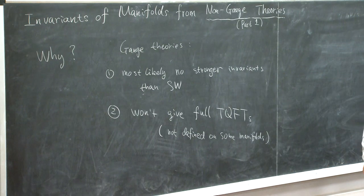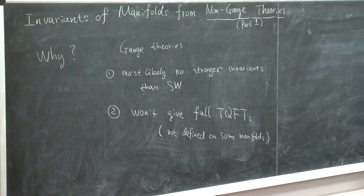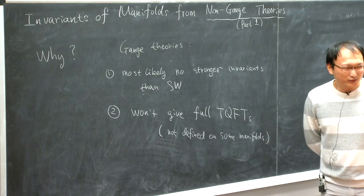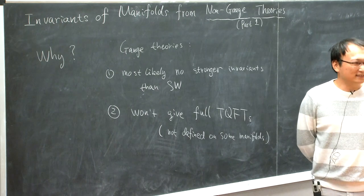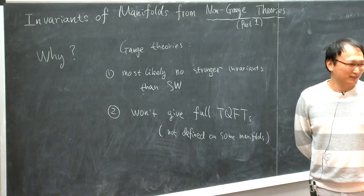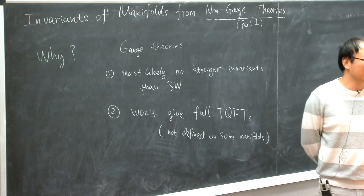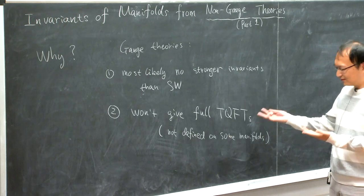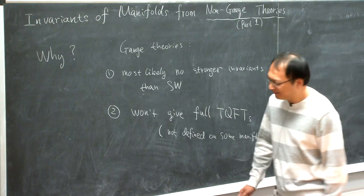When you say not defined on some manifold, do you mean you need extra structure on the manifold? Well, sometimes you need a metric, and that's not the extra structure we're going to use — we want to have some topological quantum field theory.